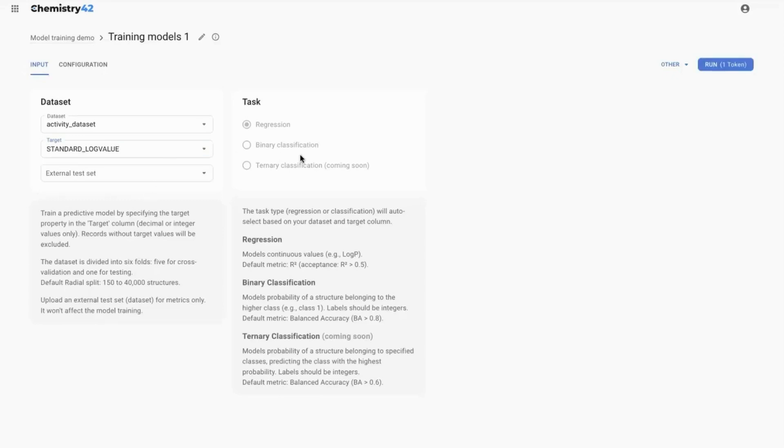You might also use an external dataset as a test set. The type of the model is chosen automatically based on the values provided in the target column.